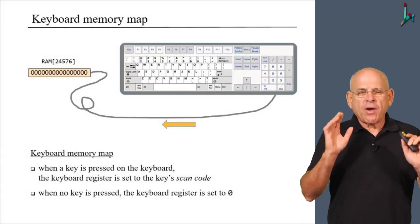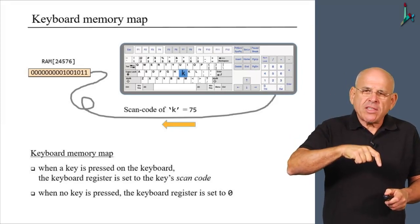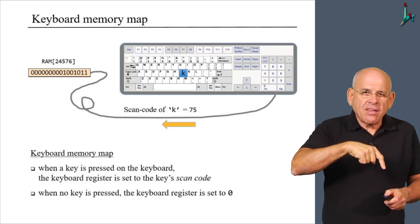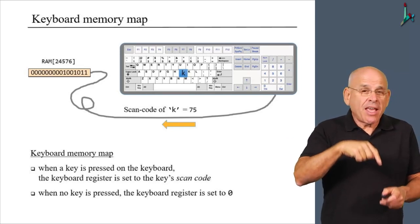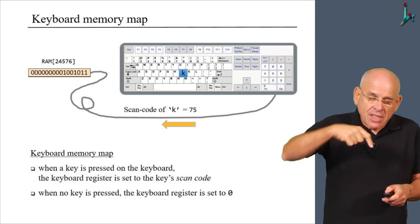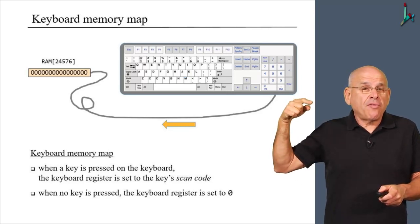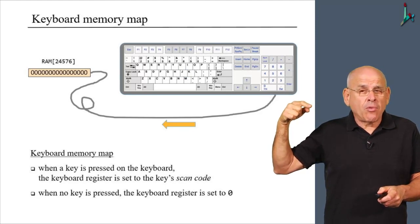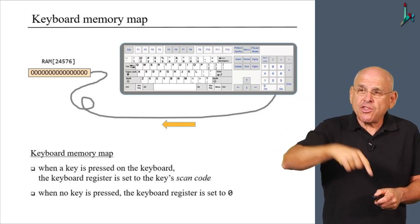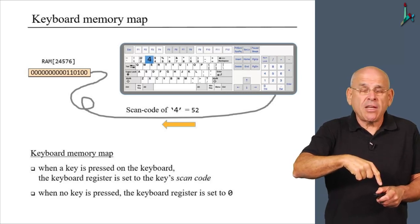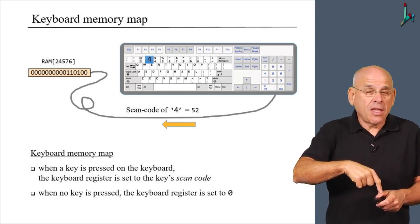Let me illustrate to you how this thing works. Suppose I take my finger and press K. As long as my finger is down on the K key, I'm going to see in the keyboard register the value of the scan code that represents K, which happens to be 75 in ASCII. As long as the finger is down, I'm going to see 75. Once I lift my finger off and nothing touches the keyboard, I'm going to see the default value, which is zero in the keyboard register. Now, I take my finger again and touch four, the key that represents the four digit. The ASCII code of four happens to be 52, and that's what I'm going to see in the keyboard register.